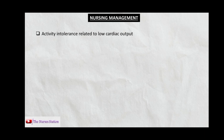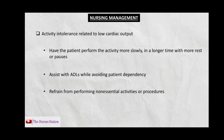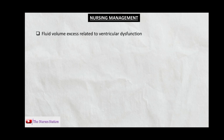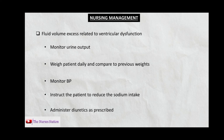The second nursing diagnosis is activity intolerance related to low cardiac output. Have the patient perform activities more slowly with more rest or pauses to conserve energy. Assist the patient with activities of daily living while avoiding patient dependency. Ask the patient to refrain from non-essential activities to save energy for purposeful ones. The third nursing diagnosis is fluid volume excess related to ventricular dysfunction. Monitor urine output and weigh the patient daily, comparing previous weights. Monitor blood pressure, instruct sodium intake reduction, and use diuretics as prescribed for edema or ascites.